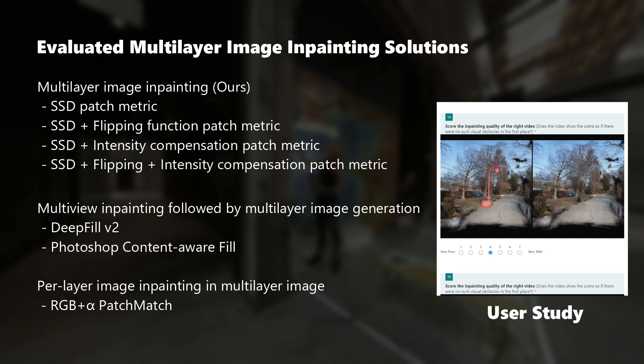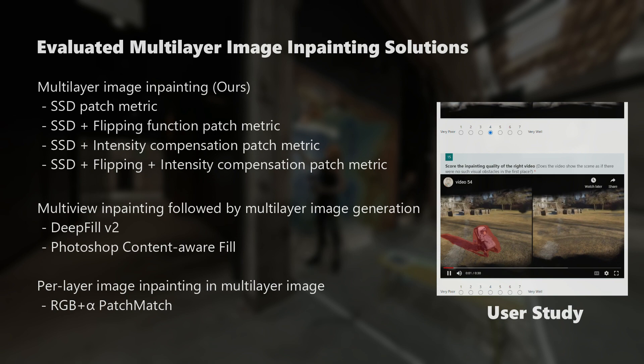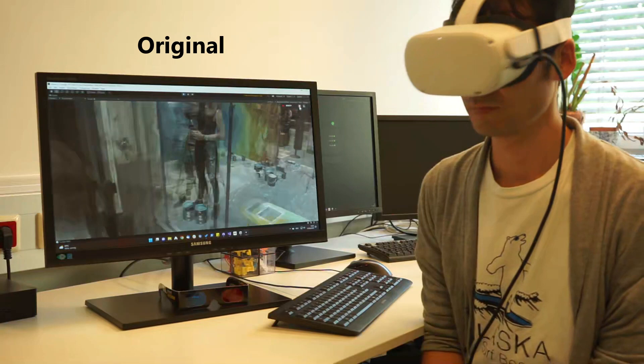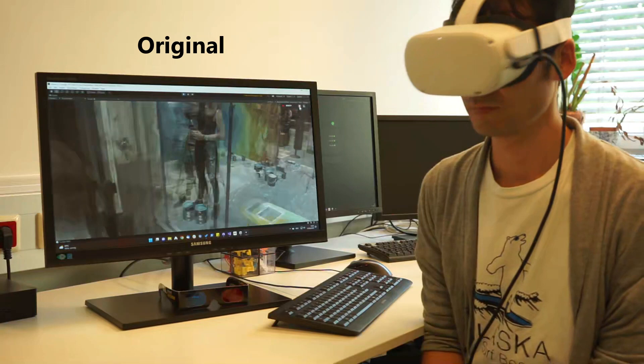Since our algorithm performs in-painting directly in the input multilayer scene representation, in-painted data can be seen in a VR headset as the original data. Here, we show the original, masked, and in-painted multilayer data in three scenes in a sequence.